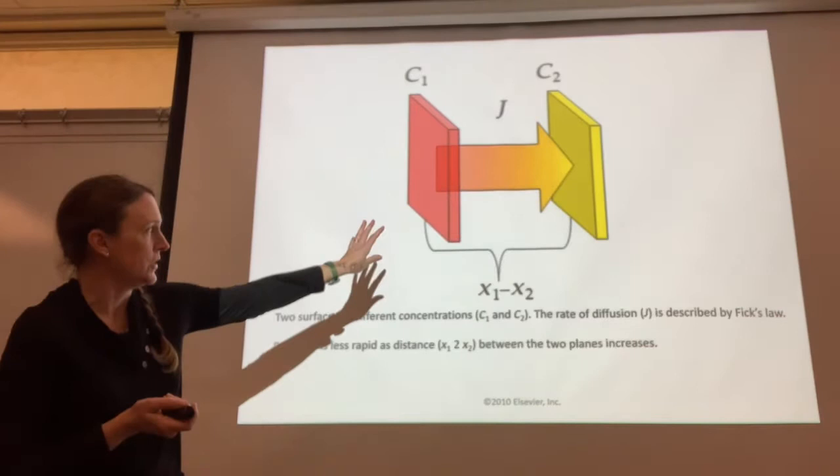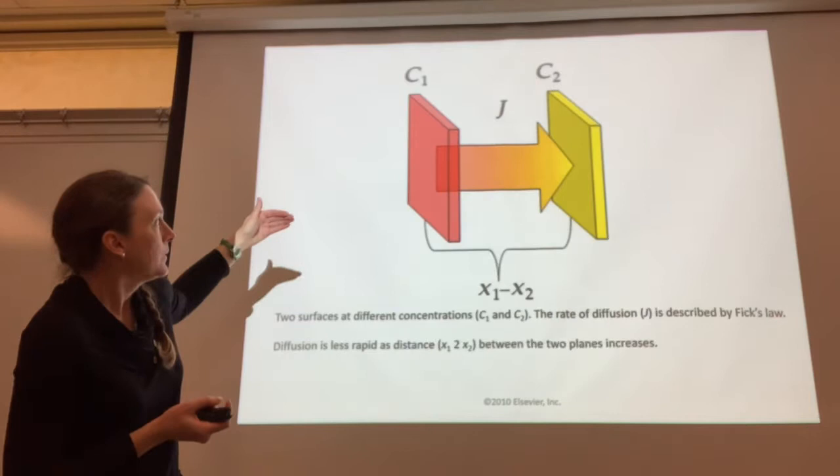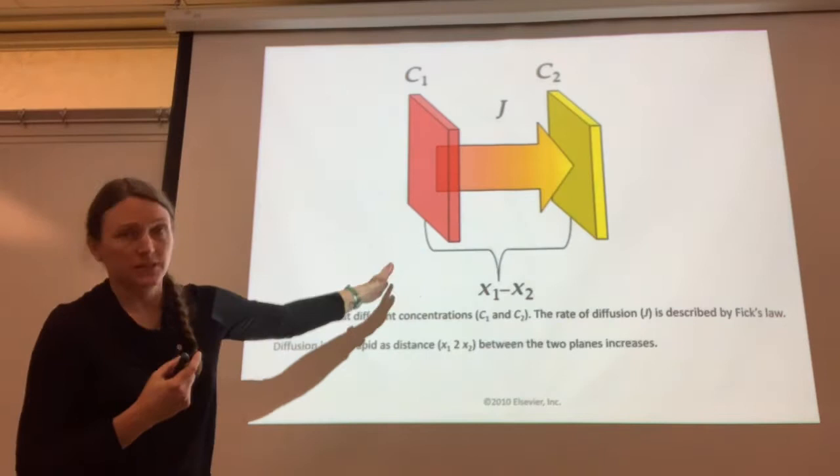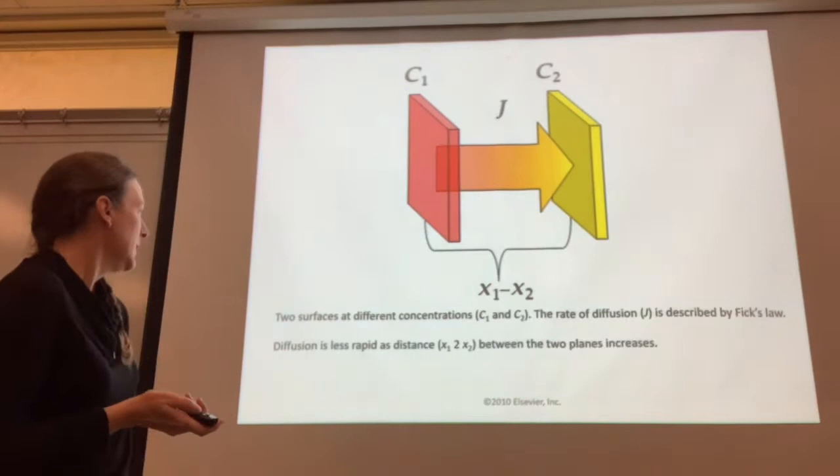This is Fick's Law. With two surfaces of different concentrations — concentration one and concentration two — you will see the rate of diffusion from the high concentration to the low concentration as described by Fick's Law. It has to do with the distance between these two concentrations and the gradient, the difference between them.